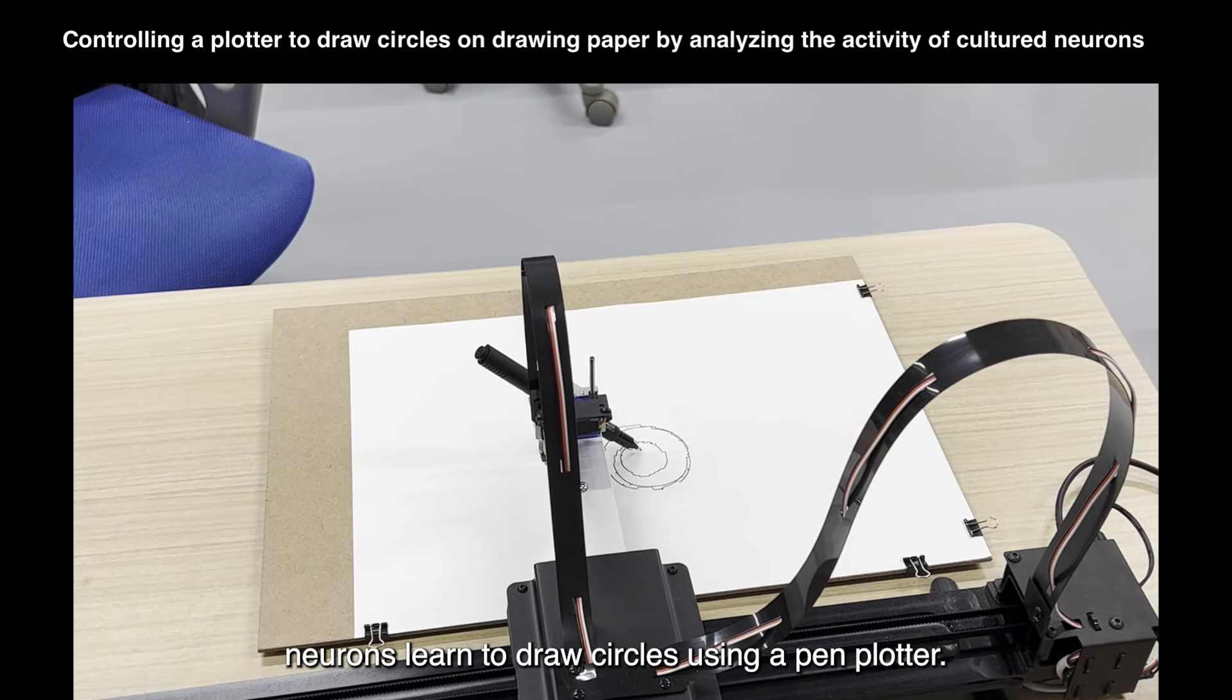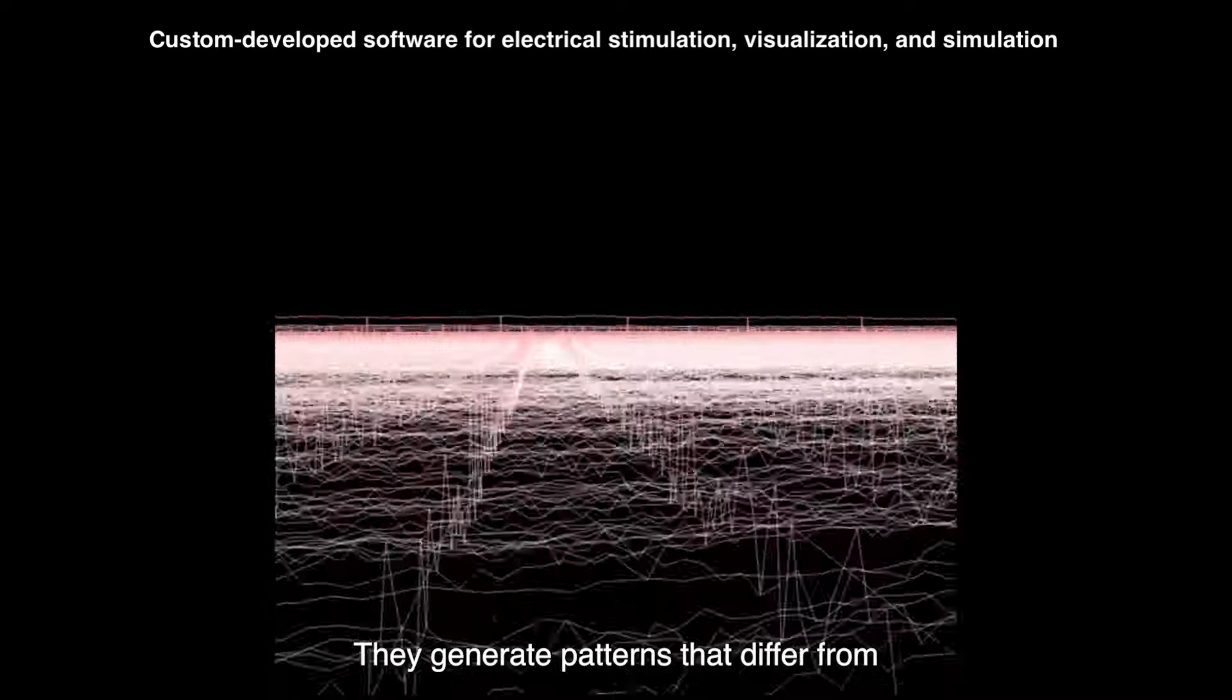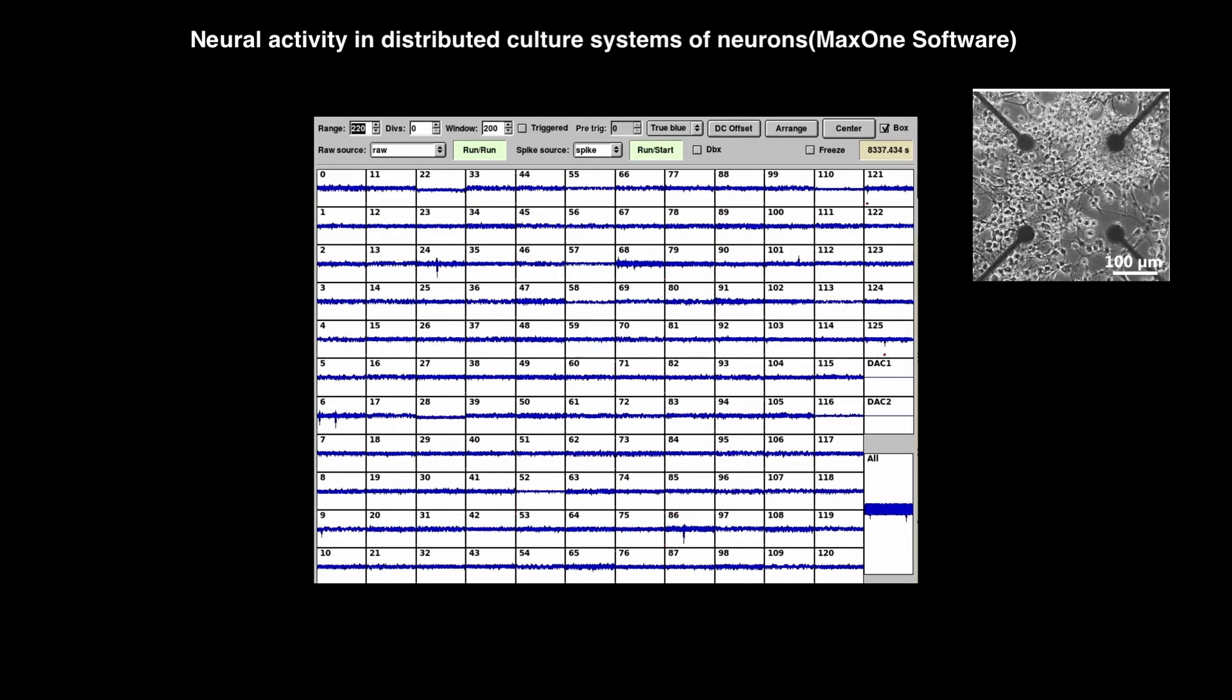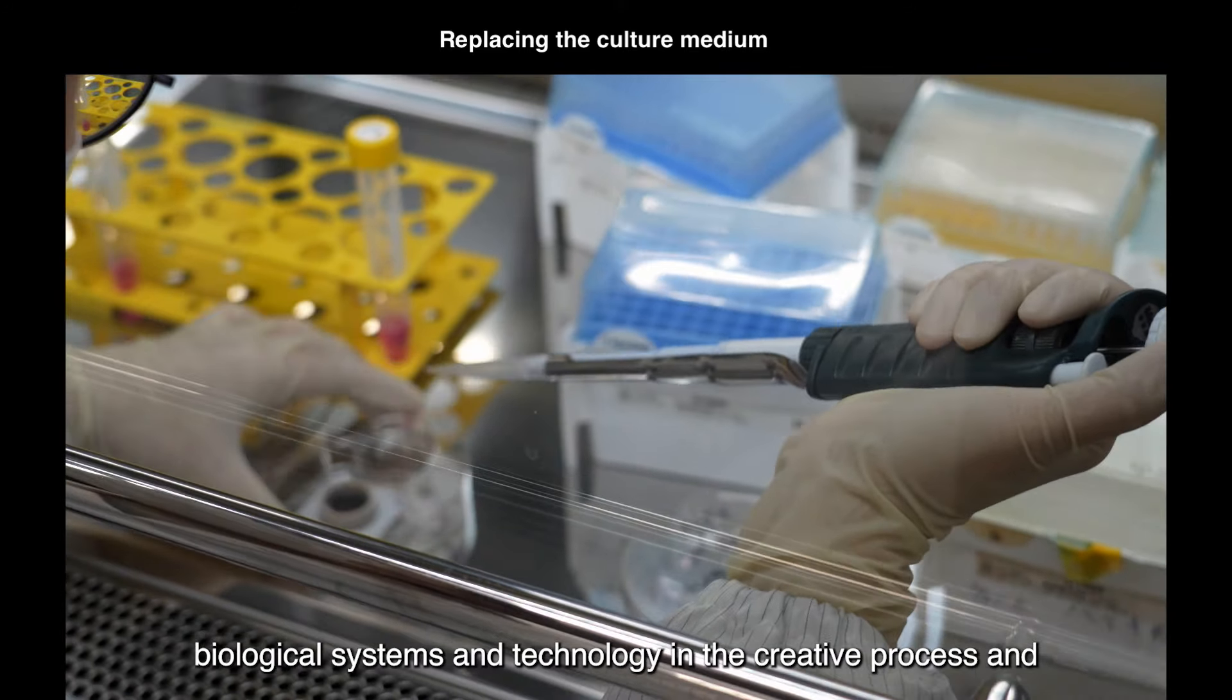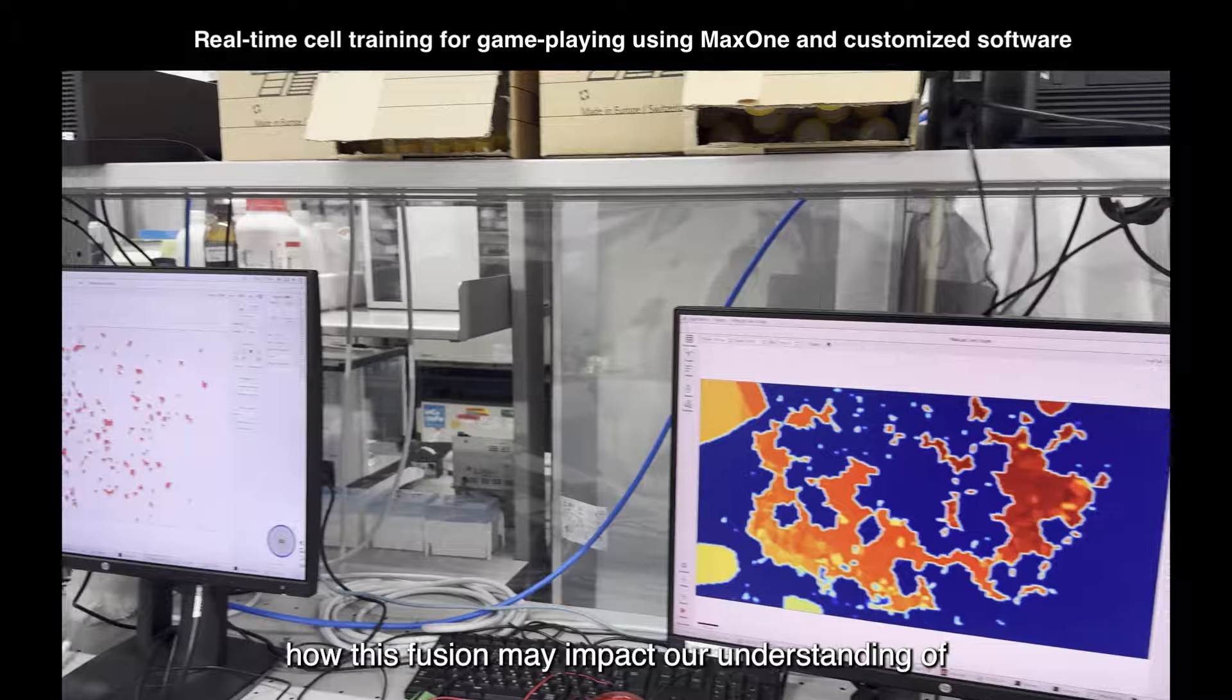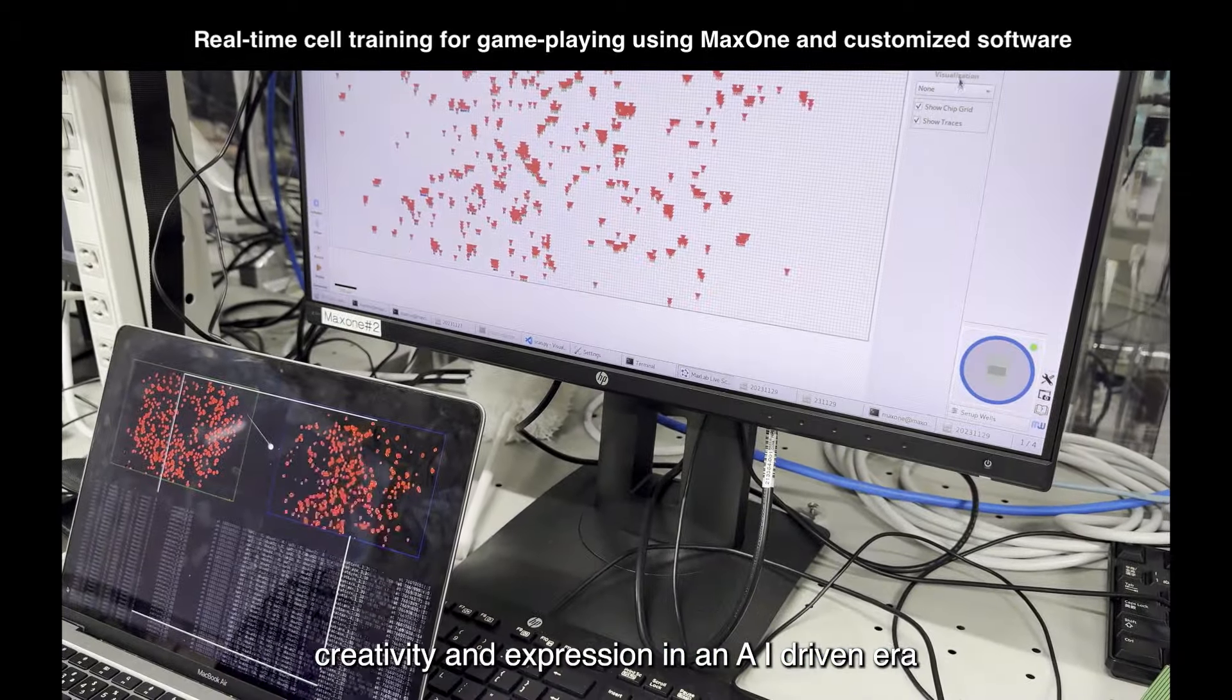As the neurons adapt to the environment through a system of rewards and punishments, they generate patterns that differ from those produced by traditional computer algorithms. This project investigates the potential outcomes of combining biological systems and technology in the creative process, and how this fusion may impact our understanding of creativity and expression in an AI-driven era.